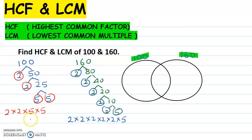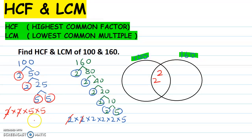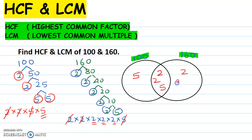Now what we need to do is see what is common. This 2 and this 2 are common, so the common part is coming here. Then this 2 and this 2 are common — write down another 2. Then this 5 and this 5 are common. What is left over in 100? That is 5. What is left over in 160? That is 2, 2, and 2 — three 2s.